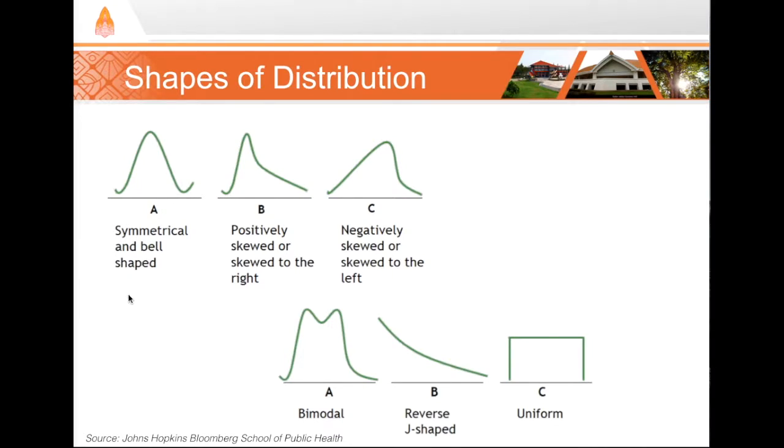The most commonly seen shapes of data distributions are shown here. We have the classic symmetrical and bell-shaped distribution, skewed to the right, which has a tail trailing off to the right, skewed to the left, bimodal, which has two close clusters of data, reverse J-shaped, and uniformly distributed. Identifying which distribution most closely represents your data will be an important step later for computing inferential statistics.